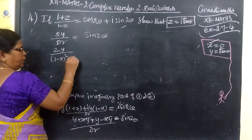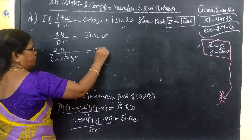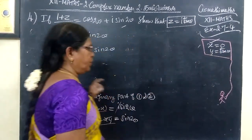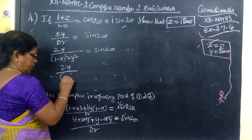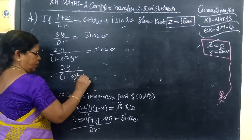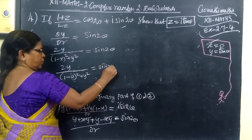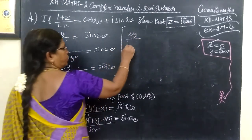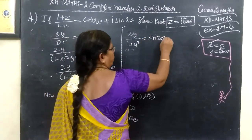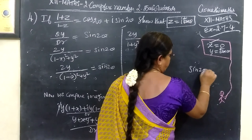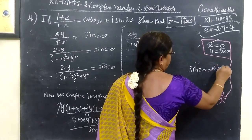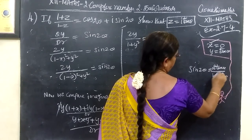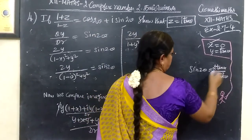So 1 minus x whole squared plus y squared equals sin 2θ. But x was already proved to be 0. So substituting: 2y divided by 1 plus y squared equals sin 2θ. We know the formula sin 2θ equals 2 tan θ by 1 plus tan squared θ.